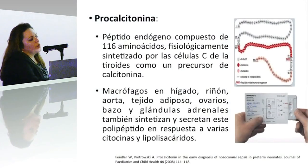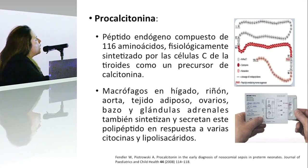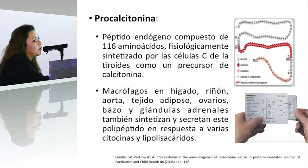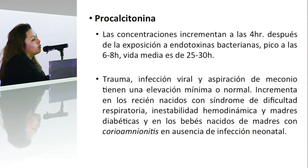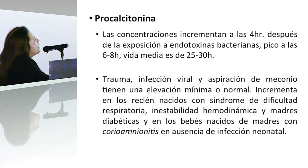Uno de los marcadores más prometedores en sepsis neonatal es la procalcitonina. Es un péptido compuesto de 116 aminoácidos que se sintetiza en la célula C de la tiroides y es un precursor de calcitonina. Su síntesis está dada por macrófagos en diferentes órganos del cuerpo y se secreta en respuesta a varias citocinas y lipopolisacáridos, lo que lo hace un marcador muy específico de sepsis. Además, incrementa mucho más rápido que el PCR: en las primeras cuatro horas después de la exposición a endotoxinas bacterianas.